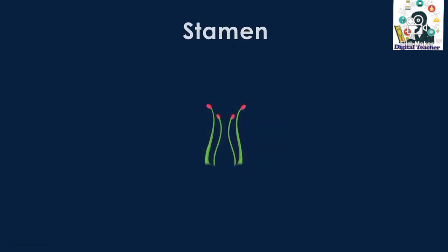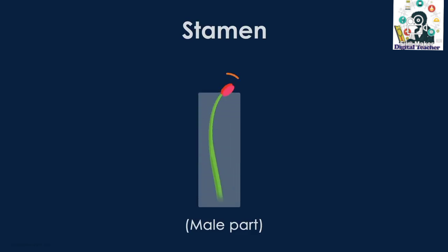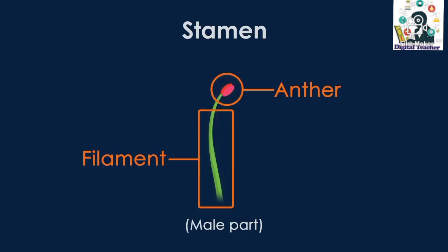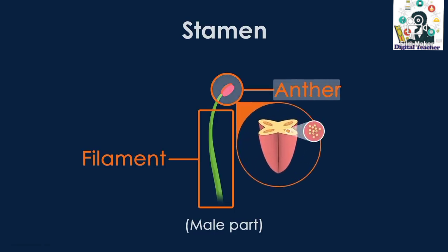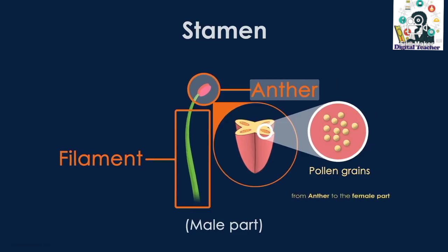The stamen is the male part of the flower. It consists of a long tube called the filament and a swollen structure called the anther. The anther bears structures called pollen grains, which play a very important role in reproduction. The pollen is transferred from the anther to the female part of the flower.